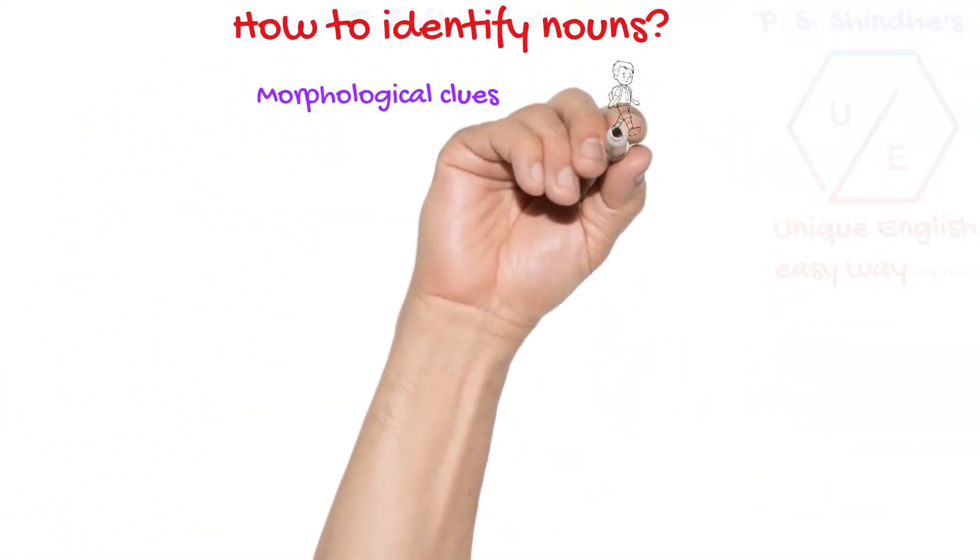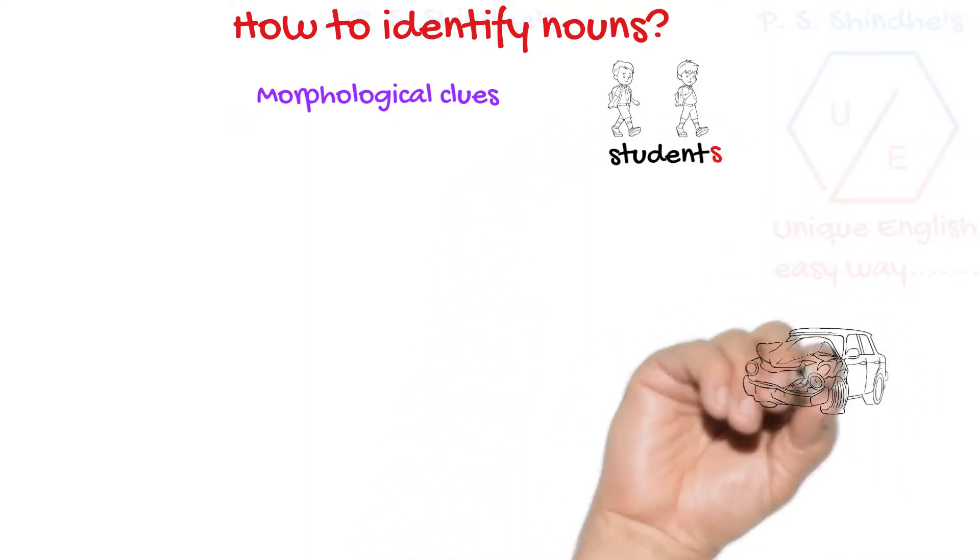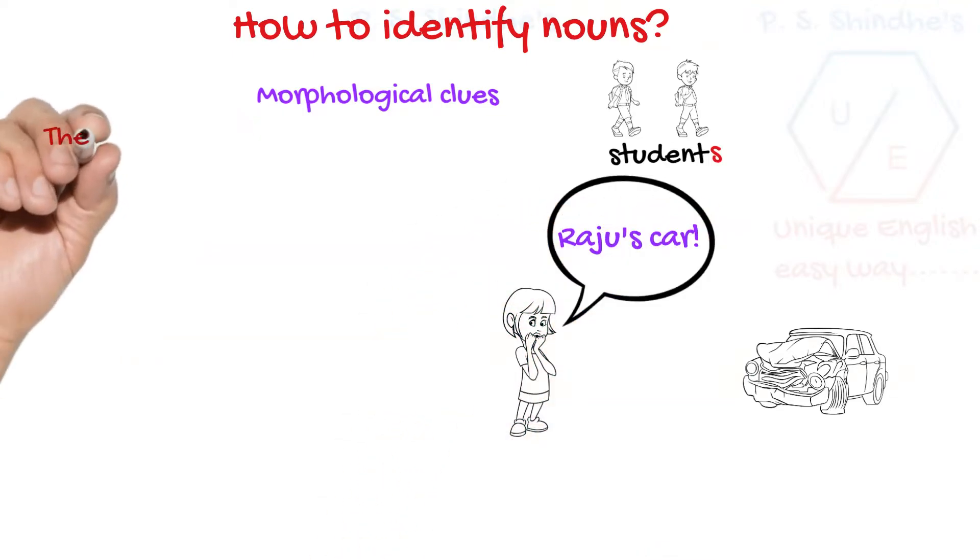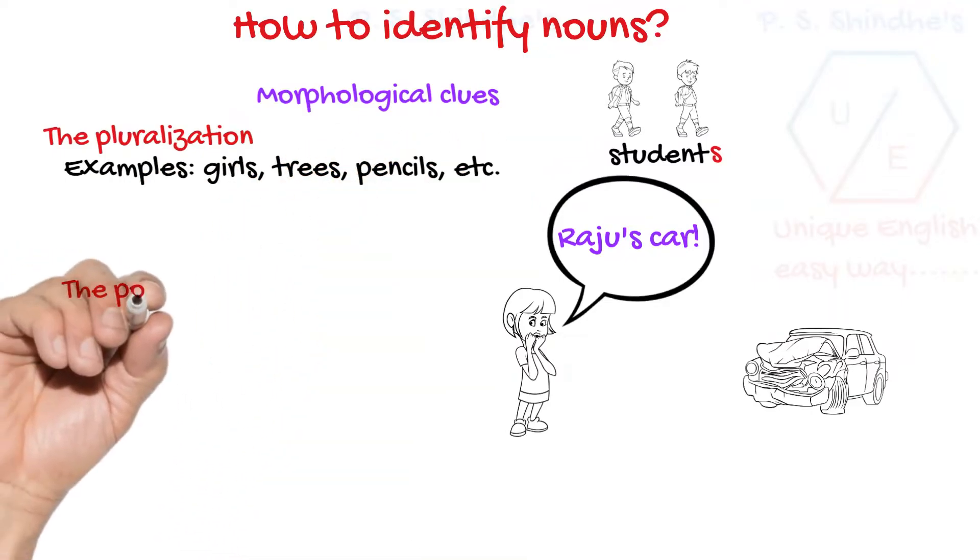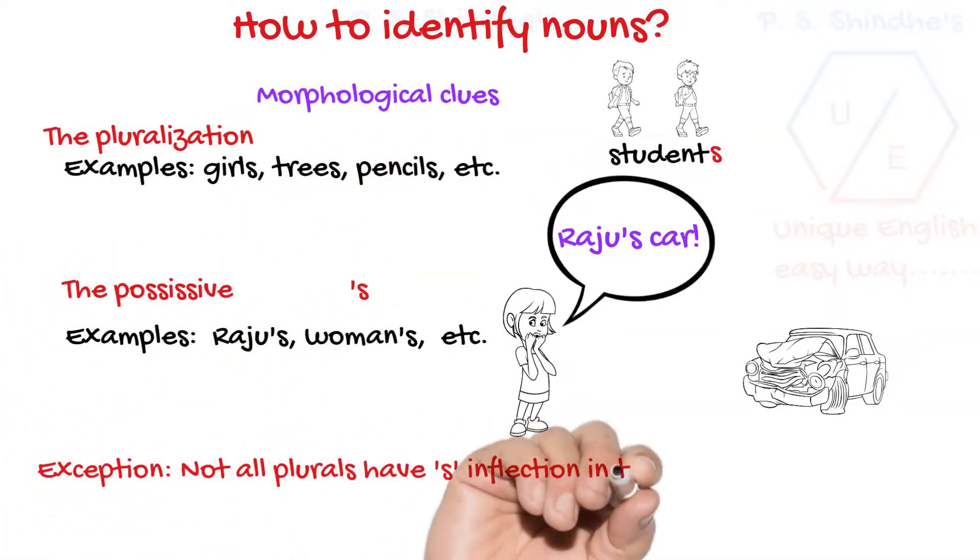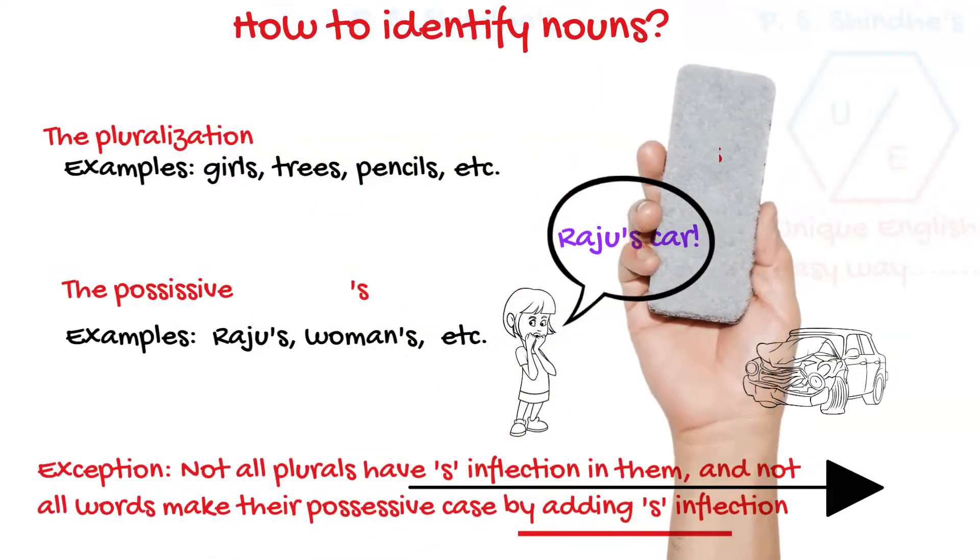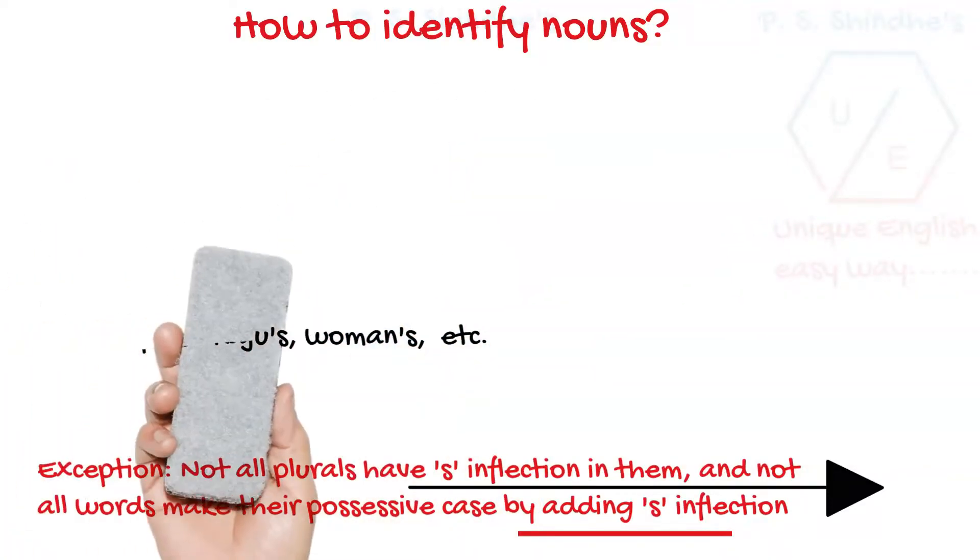Morphological clues also help us in identifying nouns. There are two clues we can visualize in the inflectional endings of many words in English. They are plural S as in girls, trees, pencils, etc. Possessives as in Raju's, woman's, etc. Please note, not all plurals have S inflection, and not all words make their possessive case by adding S inflection. However, we shouldn't overlook the importance of such morphological clues in identifying nouns.